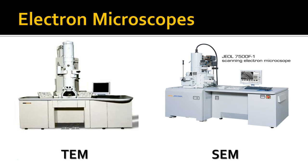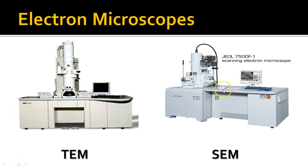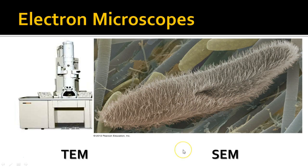The transmission electron microscope shows internal images like this — a protozoan similar to a euglena, which is a single-celled algae-like organism. You can see lots of internal structure inside the cell. Color is added later; under electron microscopes all you see is shades of gray. The scanning electron microscope has a scanning beam that scans over surfaces and shows great surface detail, like this scanning electron micrograph of a paramecium — all those little hairy things are cilia it uses to move around in the water.